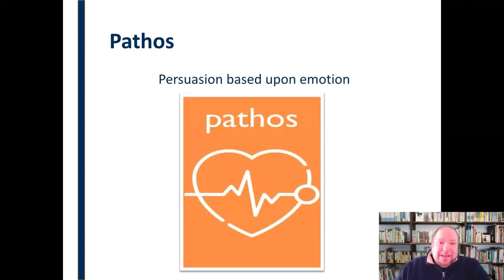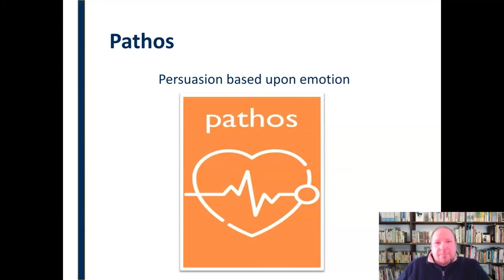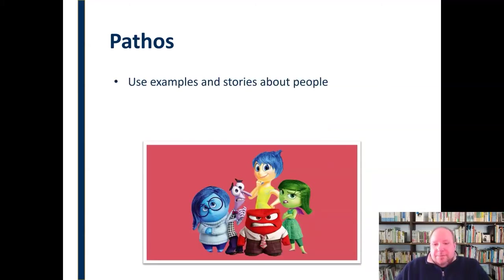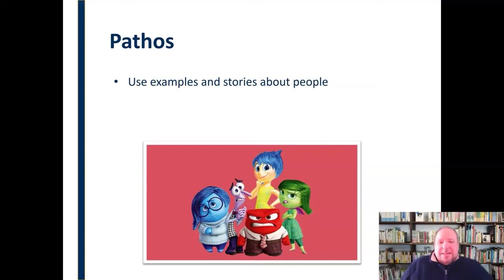The second aspect of Aristotle's persuasive strategies is called pathos, and pathos is based on emotion. Here we're tugging at the heartstrings of the audience — trying to work on them through their emotions. When we look at pathos, we need to do things like use examples and stories about people. We need to connect this topic to the audience through personalization. They want to know how this affects people — what impact this has on them as a person, on their families, on their loved ones, on their communities. So we can use examples and stories about people that demonstrate what we're talking about.